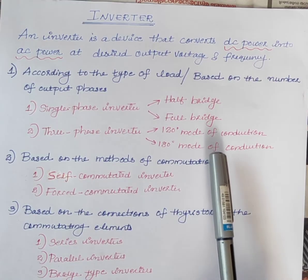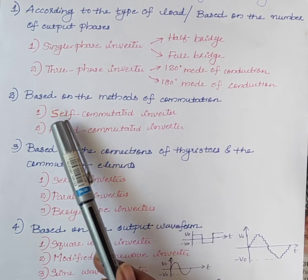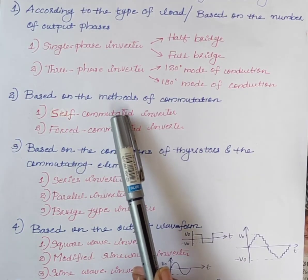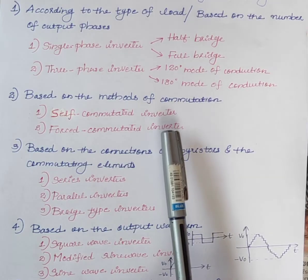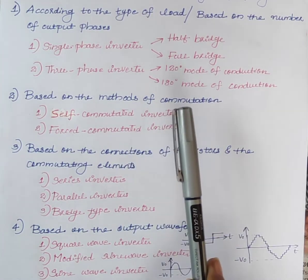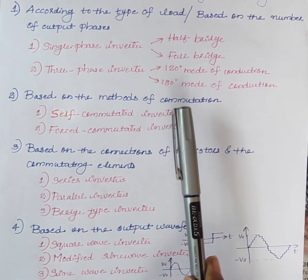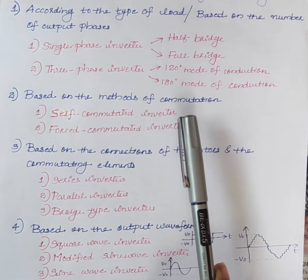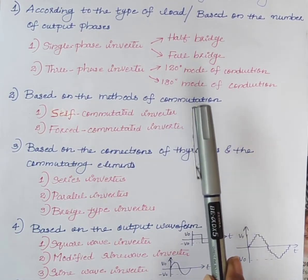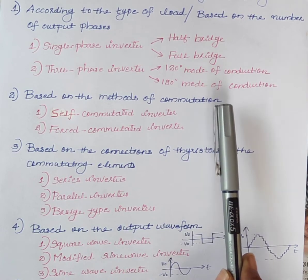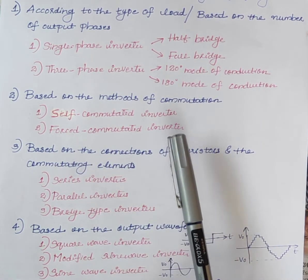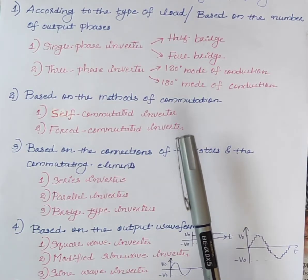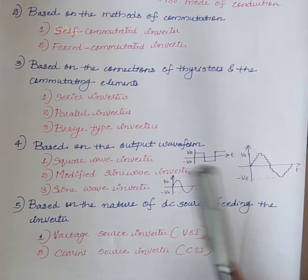Next, based on the method of commutation, inverters are classified into self-commutated inverter and forced commutated inverter. Self-commutated inverter does not require additional commutation circuitry, which reduces the complexity and cost. Examples include inverters using GTOs and transistors as switches. In forced commutated inverters, additional commutation circuitry is required. An example is inverters using thyristors as switches.